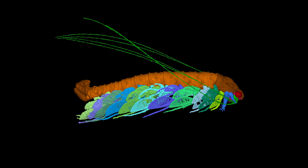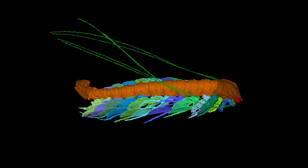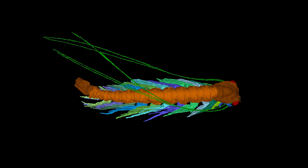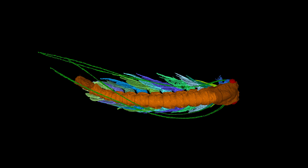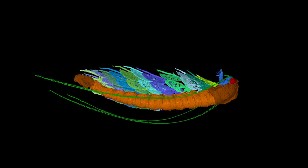The different parts of the animal are picked out in different colors, and the first thing to note is that it's so beautifully preserved in three dimensions. There is no compaction whatsoever.